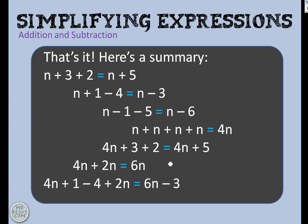So that is it — we've been on a whistle-stop tour of simplifying expressions with one variable, just looking at adding and subtracting. So what did we look at? n add 3 add 2 is the same as n add 5. n add 1 take away 4 is the same as n take away 3. n take away 1 take away 5 simplifies to n take away 6. n plus n plus n plus n is 4n. 4n plus 3 plus 2 is the same as 4n plus 5. 4n plus 2n equals 6n. And when you've got a whole bunch of terms, some that have variables and some that don't, we get them into little groups: the 4n added onto the 2n gives you 6n, and the add 1 take away the 4 gives you the take away 3 part.